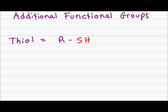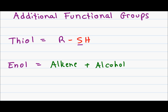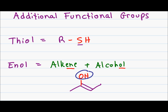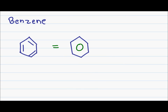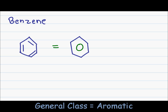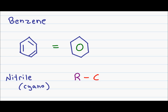Let's look at a number of less common functional groups. A thiol is a sulfur alcohol — recall that sulfur is directly beneath oxygen on the periodic table, and because they share chemical characteristics, they can bond in the same fashion. So where an alcohol is ROH, you replace the oxygen with sulfur to get a thiol. An enol is a combination of an alkene and an alcohol — that's where you get the name enol. We have a double bond for the alkene and the hydroxyl for the alcohol. A benzene is characterized as a six-membered carbon ring with alternating double bonds, often represented by drawing a circle in the center of the ring. A nitrile is characterized by having a C triple-bonded to N on an R group, where CN is the cyano portion of the molecule, similar to cyanide.